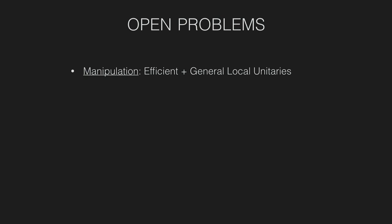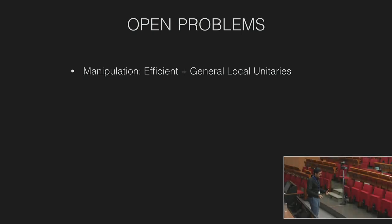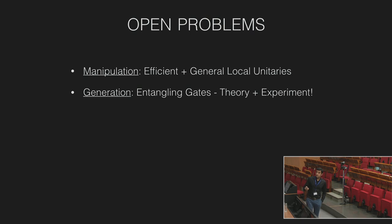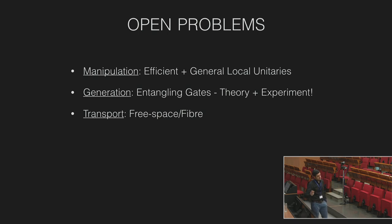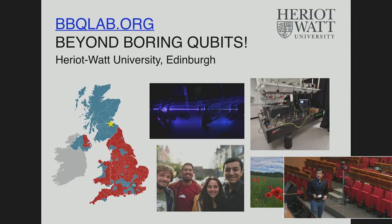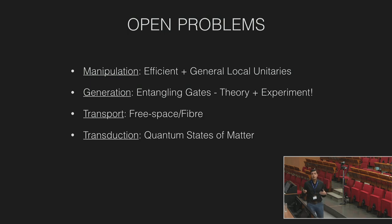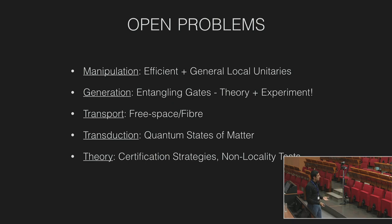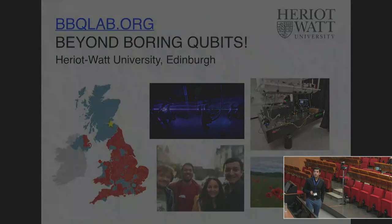What are the open problems in high-dimensional quantum photonics? One is manipulation — we need to figure out how to do simple things like half-wave plates and quarter-wave plates in high dimensions, and rotations. How to generate and measure them, both theory and experiment. Transporting them — I showed some work on transporting spatial entanglement through fiber. Coupling them with quantum states of matter. And finally, the theory of how to measure and certify high-dimensional entanglement, both for non-locality and for steering. These are the various things my group works on right now.